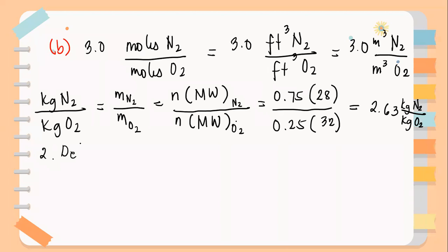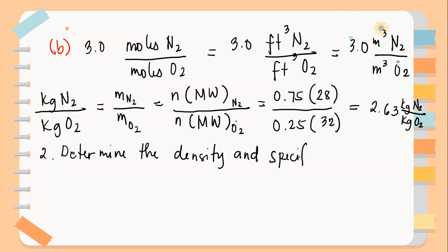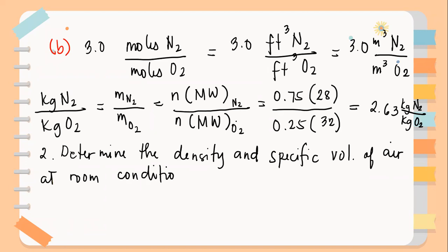Determine the density and specific volume of air at room condition. If you notice, you might say there's no given — but there is a given because of the room condition. Therefore, we have constant values for the temperature and the pressure.